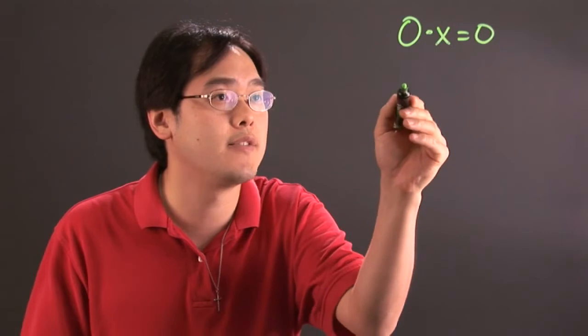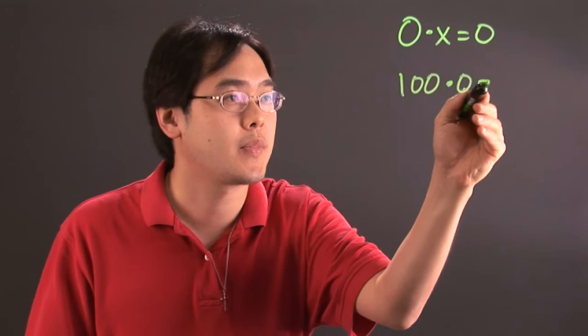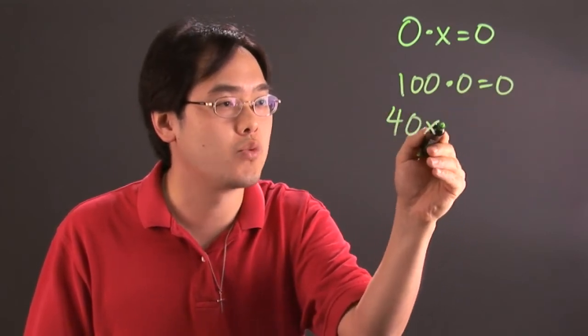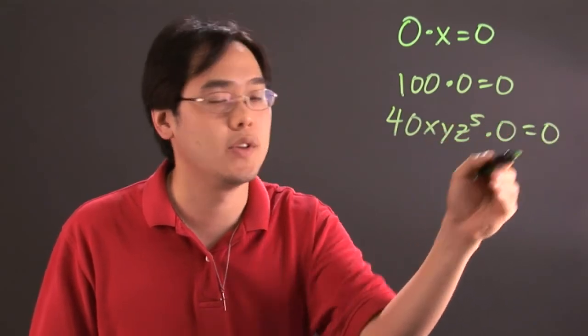For example, if you have 100 times zero, that's going to give you zero. If you have 40xyz to the fifth times zero, that's also going to give you zero.